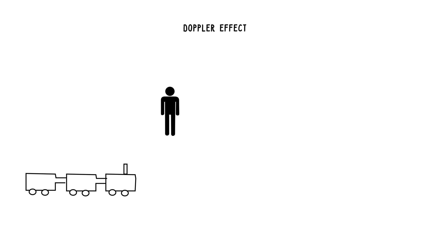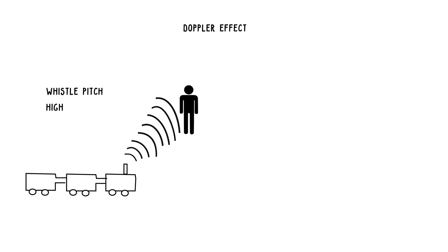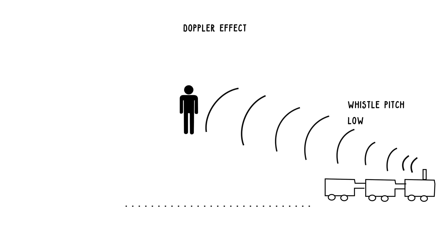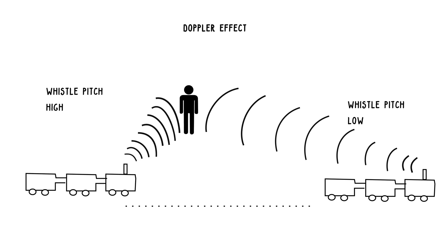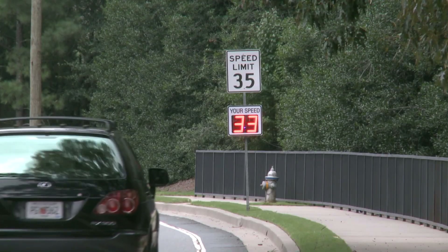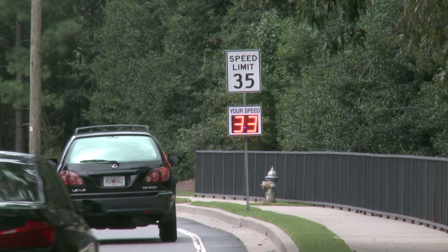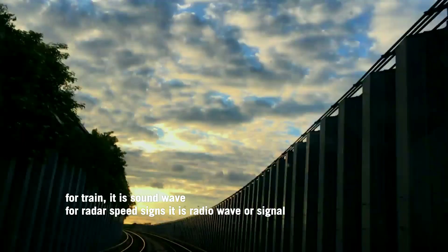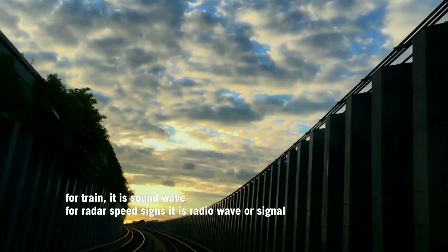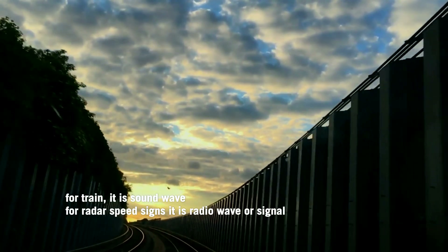A common example of the Doppler effect: suppose you are standing and a train moves towards you and then passes, moving away from you. You will observe a change in the whistle pitch of the train from higher to lower. This is due to the Doppler effect. The radar speed signs work in the same way, but in the train example it is a sound wave that transmits.